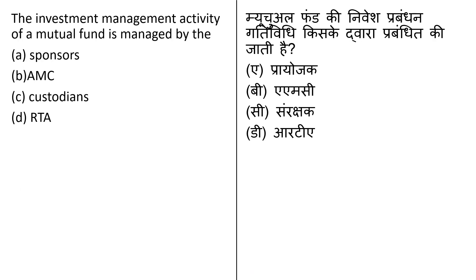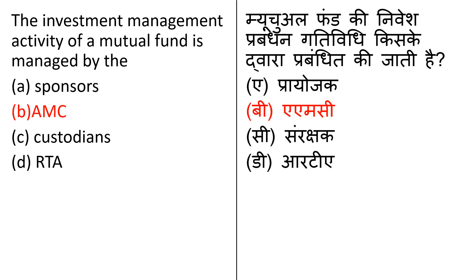Who manages the investment management activity of a Mutual Fund? Options are Sponsors, AMC, Custodian, and RTA. Sponsors are corporate entities that provide support within the financial services industry. AMC is the regulatory body of a mutual fund — it oversees all administrative, managerial, and operating functions. Custodian is a SEBI-registered market intermediary primarily responsible for safekeeping of securities. RTA — Registrar and Transfer Agent — are trusts or institutes that register and maintain detailed records of investor transactions for the convenience of mutual fund houses. The correct answer is option B: the investment management activity of the mutual fund is managed by AMC, the Asset Management Company.